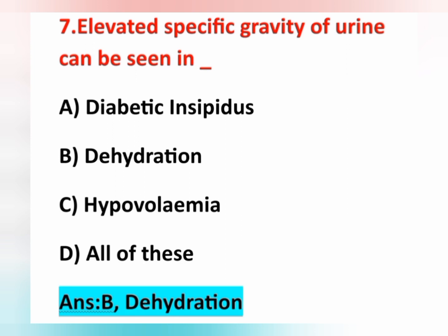In dehydration — due to diarrhea, less water intake, or vomiting — the body's water content is less, so urine output decreases and specific gravity increases. Another condition with elevated specific gravity is SIADH — Syndrome of Inappropriate Secretion of Antidiuretic Hormone. In diabetes insipidus, urine output increases, so specific gravity decreases. Among the options, dehydration is the correct answer.